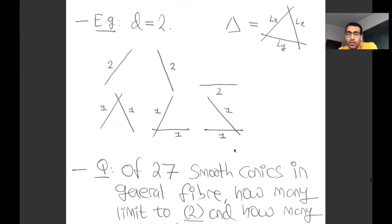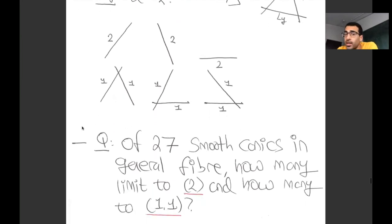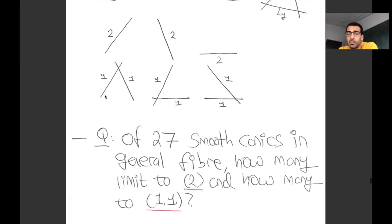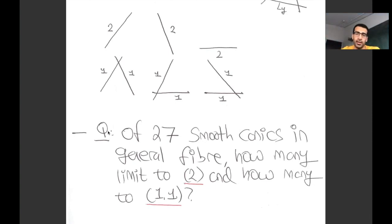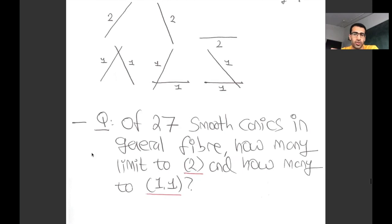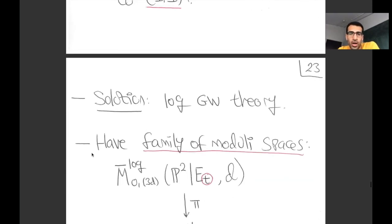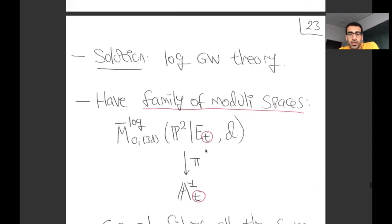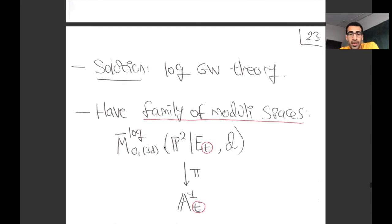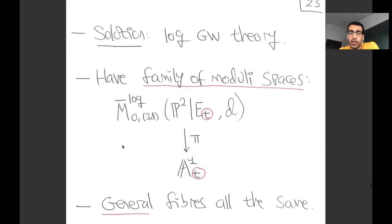In the degree-two case we saw there were 27 smooth conics in the general fiber. The question is: how many of them limit to a double line, and how many limit to a split conic? This seems innocuous but it's not necessarily obvious what the answer should be. For degree two it may be possible to answer classically, but for degree three the corresponding question is even more complicated and I don't know any classical method for it. Our approach is to consider the corresponding problem in Gromov-Witten theory: there's a family of cubics degenerating to the toric boundary, giving a corresponding family of moduli spaces over A1. The general fibers of these moduli spaces are all essentially the same—the moduli space of log stable maps to the cubic.